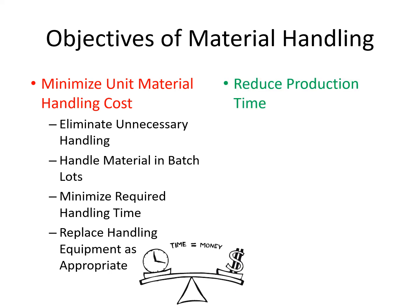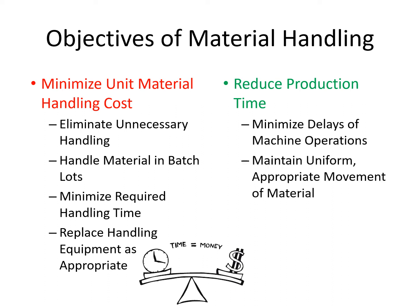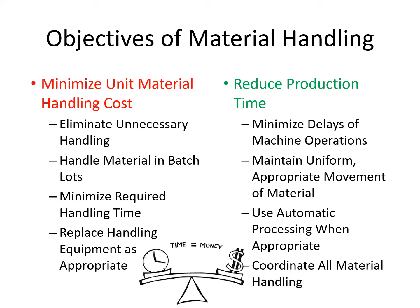To reduce the production time, one must minimize the delays of machine operations. One should try and maintain uniform or appropriate movement of material and use automatic processing wherever appropriate. All the material handling activities should be coordinated so that the overall material handling and production time is reduced.